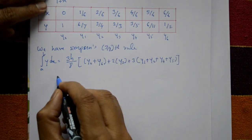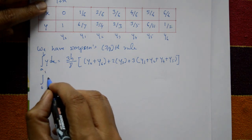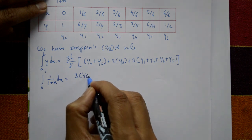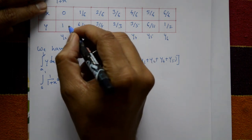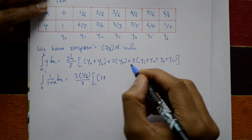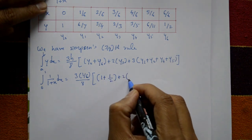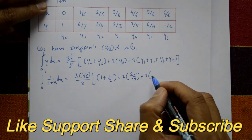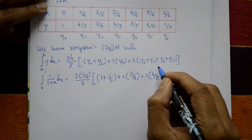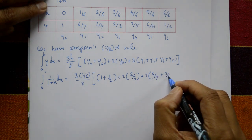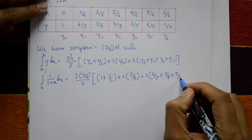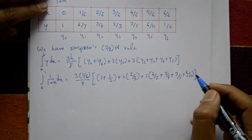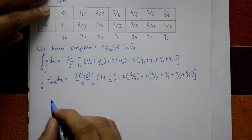Substituting the values, the integral from 0 to 1 of 1/(1+x) dx = (3 × (1/6)) / 8 × [(1 + 1/2) + 2×(2/3) + 3×(6/7 + 3/4 + 3/5 + 6/11)]. Here y₀=1, y₆=1/2, y₃=2/3, and y₁, y₂, y₄, y₅ are 6/7, 3/4, 3/5, 6/11 respectively.